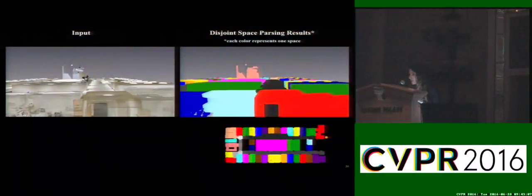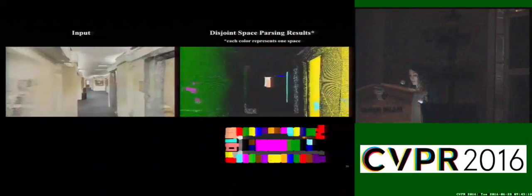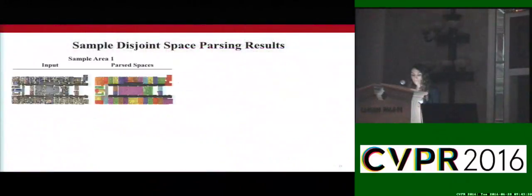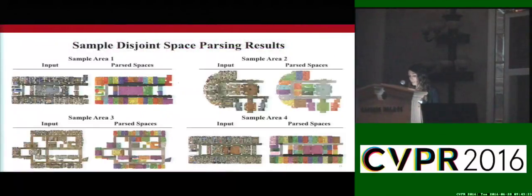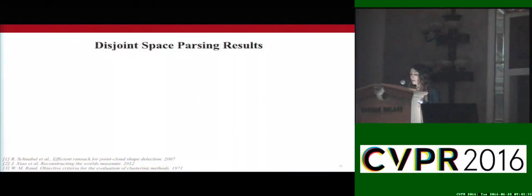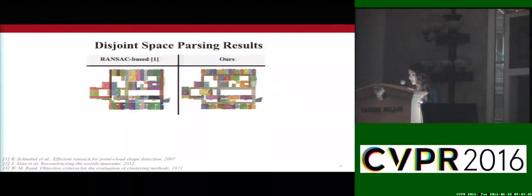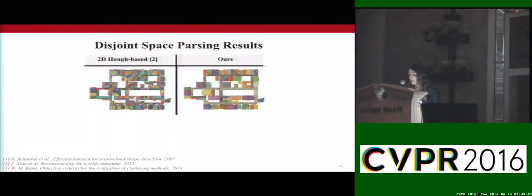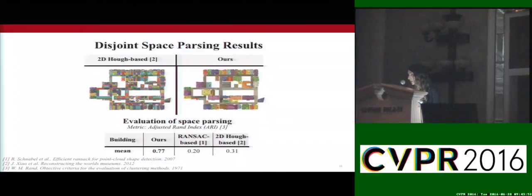This is a fly-through video of the disjoint space parsing results, where each color represents one space. As mentioned, the approach is unsupervised, parameter-free, and can handle large-scale spaces as it has linear complexity. Here are some qualitative results of space parsing for four different areas — the algorithm can handle areas with different levels of regularity and repetitiveness. We compare our method to surface and line-fitting algorithms. Parsing such large spaces into rooms is less obvious than you might think. For example, applying RANSAC ends up missing some wall surfaces, and applying a line-fitting Hough transform results in an over-segmented floor plan. The better performance of our algorithm can also be observed in the numerical results.